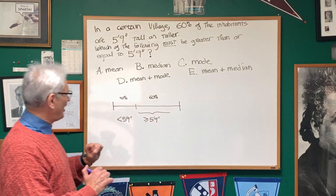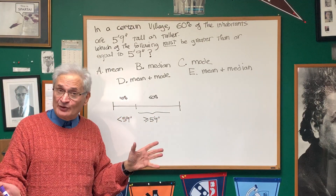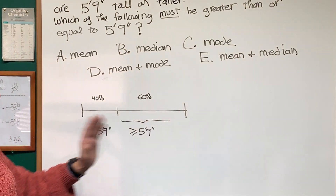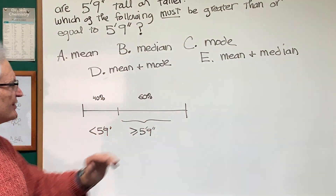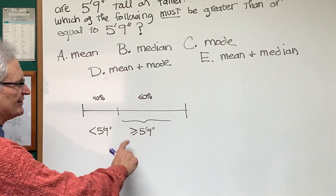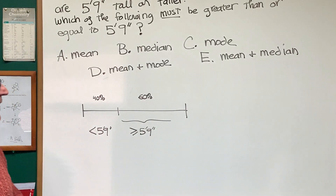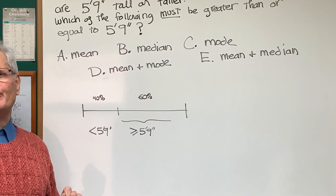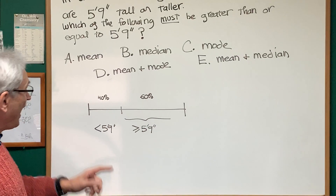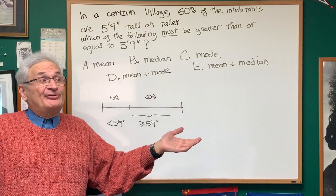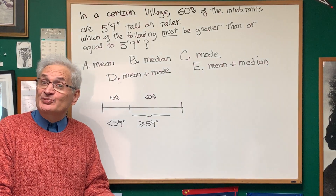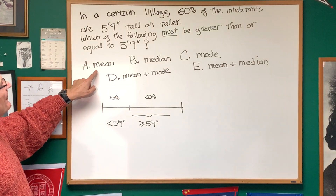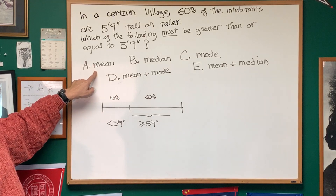Let's attack these one at a time. How about the mean, which is the arithmetic average? Here I made a little chart. 60% — if we put all the people in the village in order of height, from smallest to highest, we get this distribution. Here is the 60% that's greater than or equal to 5 foot 9. What would happen if everyone in the 60% portion were exactly 5 foot 9, and everyone in the 40% was 5 foot 0? The arithmetic average certainly would not be 5 foot 9 — it would have to be less. So it's definitely not the mean.